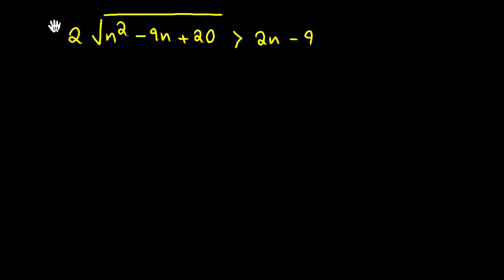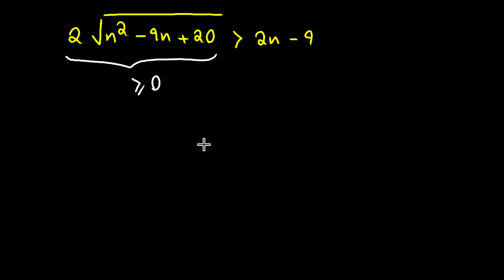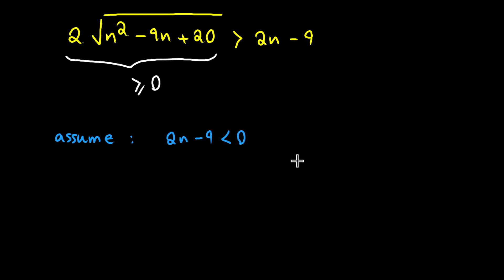Notice that the left hand side of this inequality is something non-negative, but we don't know if the right hand side is positive, negative, or equal to zero. So let's assume that the right hand side, which is 2n minus 9, is something negative. If this happens, then since the left hand side is non-negative, the inequality will hold, because any non-negative number is always greater than something negative.